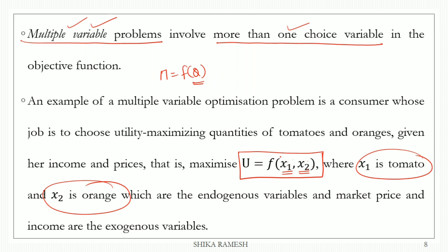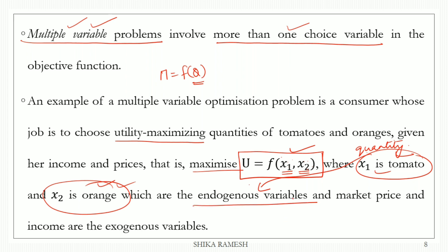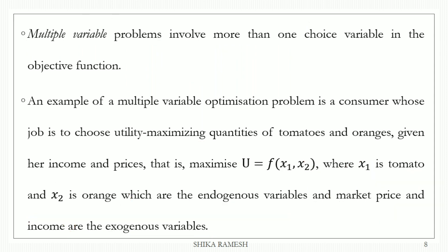The function U = f(x1, x2) represents how much quantity of tomatoes and oranges the consumer can use to maximize utility. The quantity of tomatoes and oranges consumed are endogenous variables — they are under consumer control. However, market prices and income are not under consumer control, so they are exogenous variables.